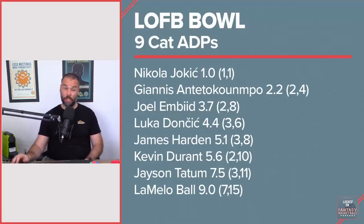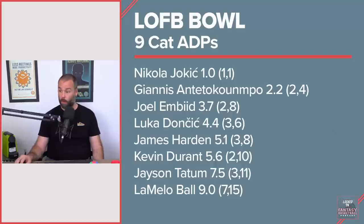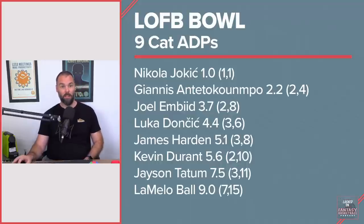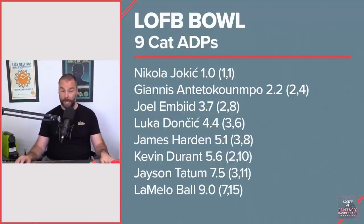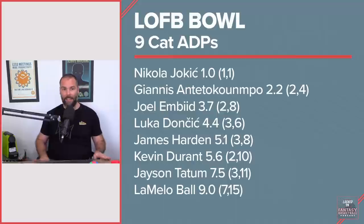Not a surprise at all — maybe a little bit of a surprise. Nikola Jokic went at number one in every single league, number one right across the board. Giannis had an ADP of 2.2; he went either 2, 3, or 4. Embiid came in third with an ADP of 3.7, as high as 2 and as low as 8. What league did he go 8? That is a big slide.